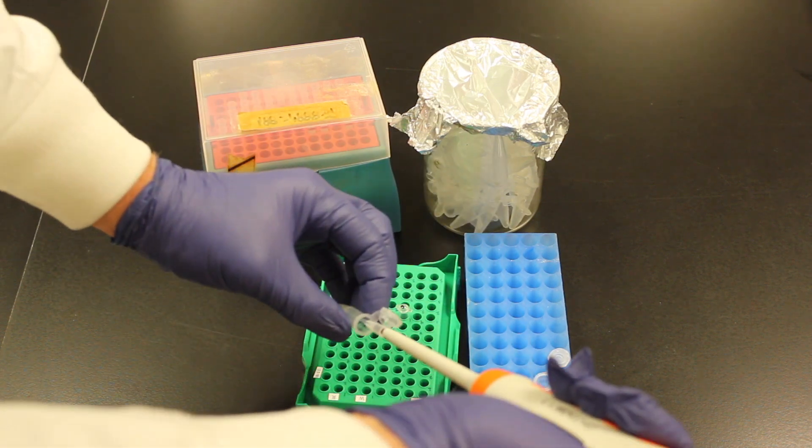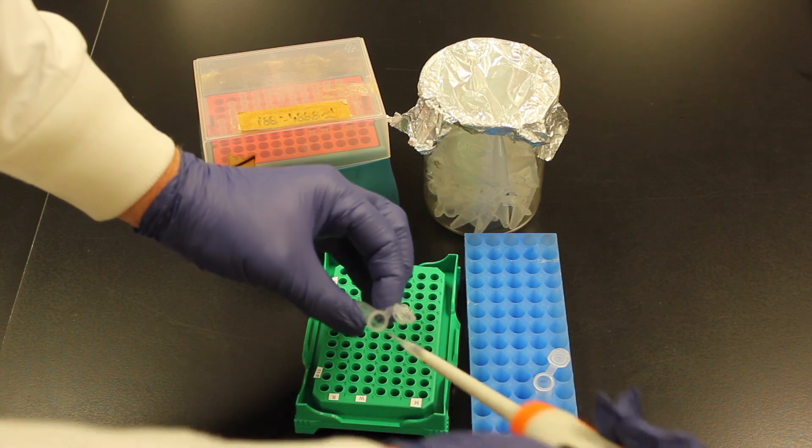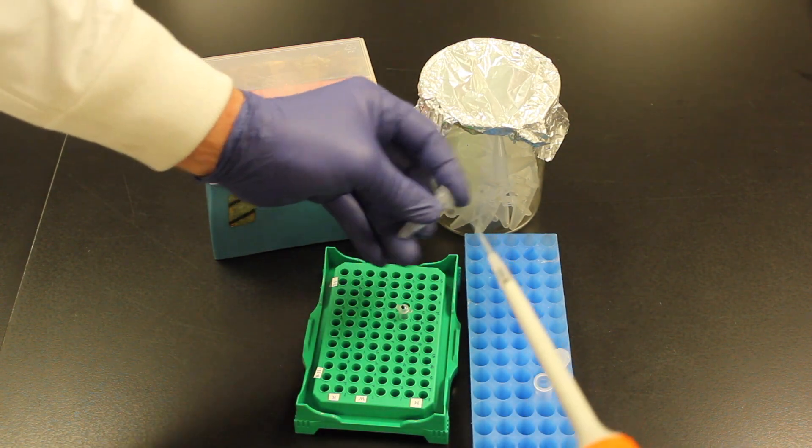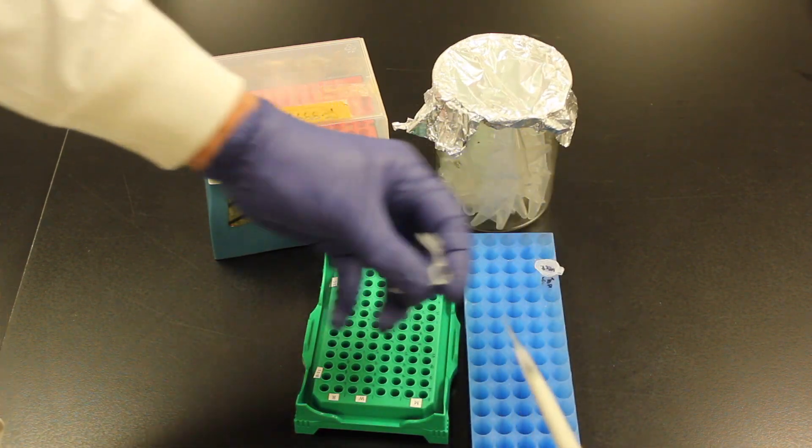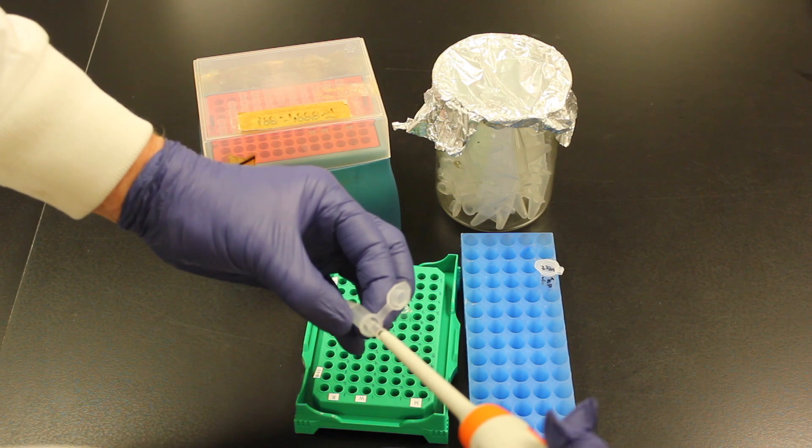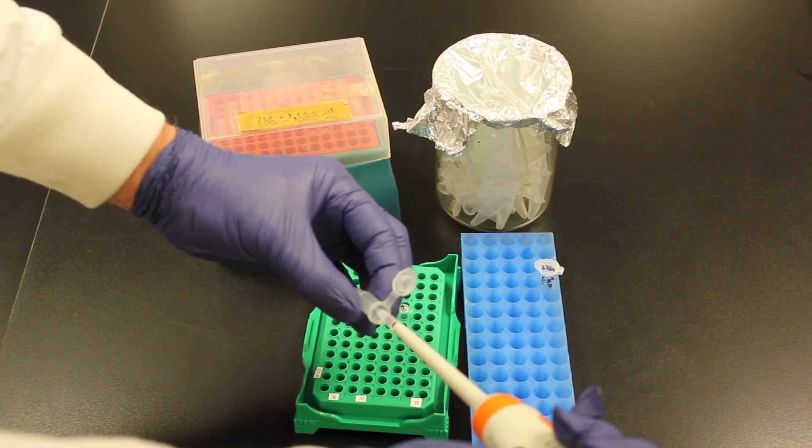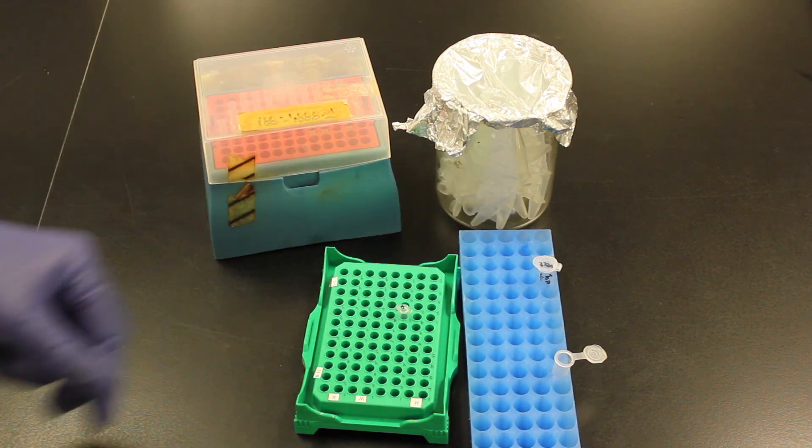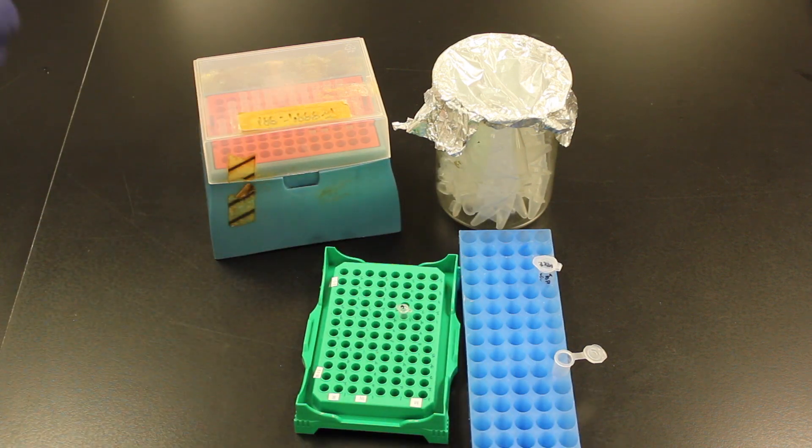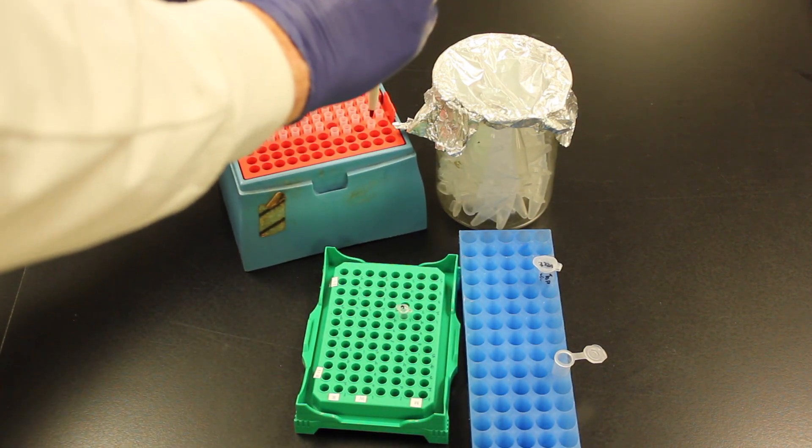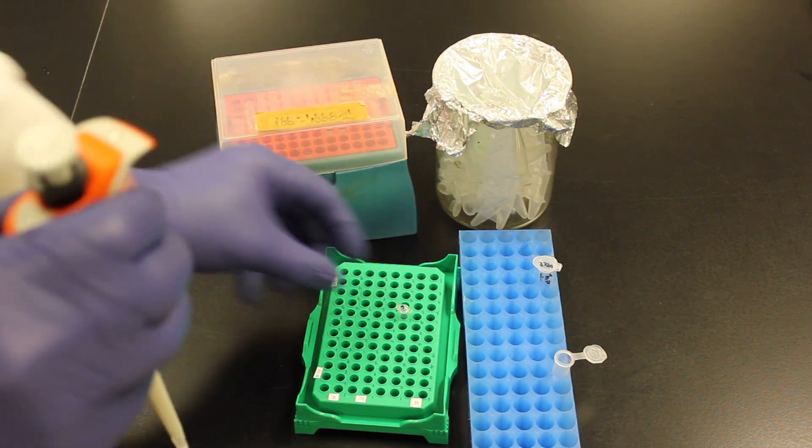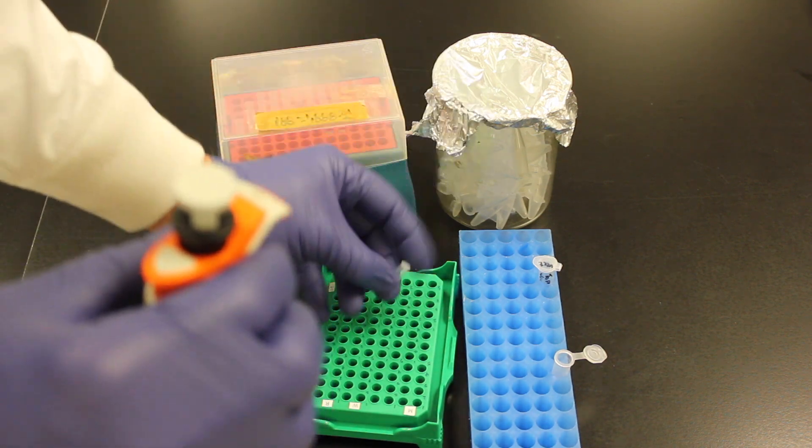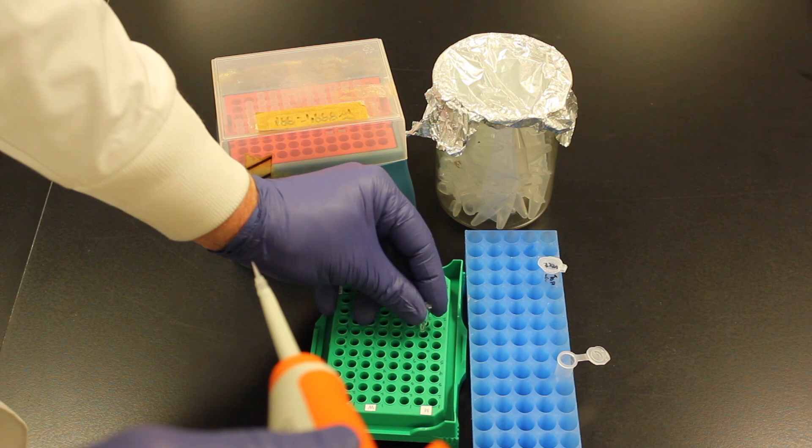And I will then go in and grab five microliters of my topovector. And we'll put this into the bottom of the tube. Hold down that thumb when I pull out and make sure that it's in that tube. Okay, I'll get rid of my pipette tips, switch pipette tips. Change this to one microliter.